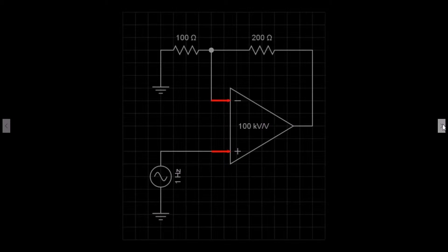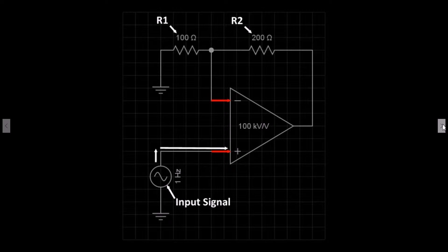Notice the positions of the inverting and non-inverting inputs. Resistor 1 is connected between ground and the inverting input. Resistor 2 is connected between the output and the inverting input. The input signal is a 10V peak-to-peak sine wave and is connected directly to the non-inverting input.